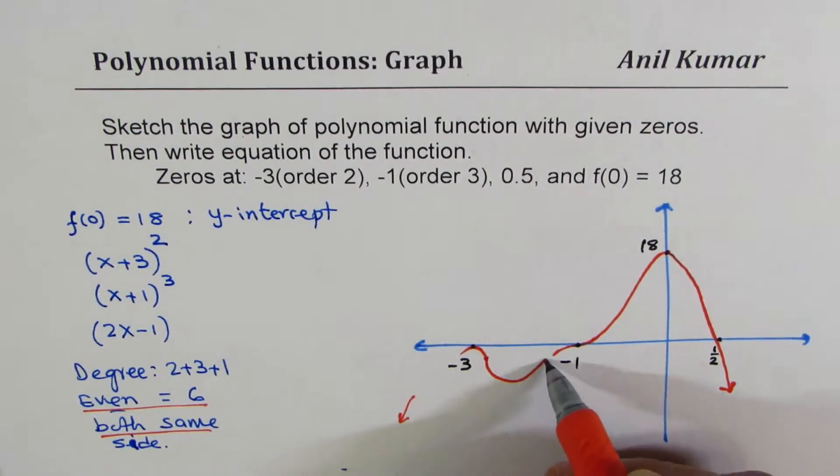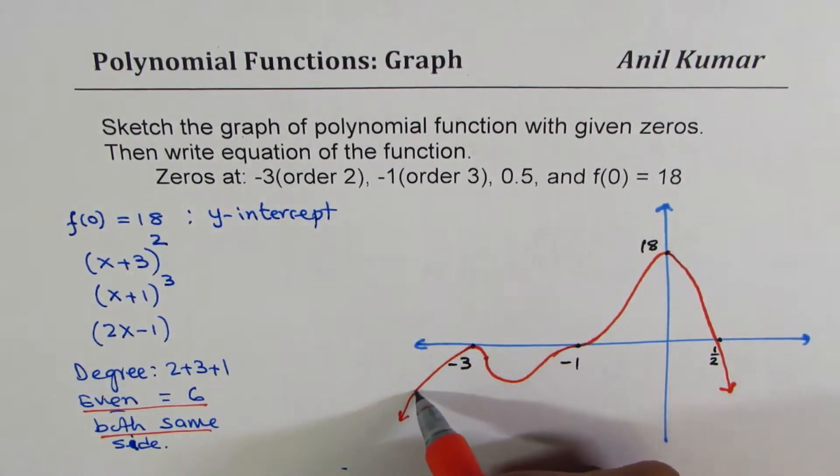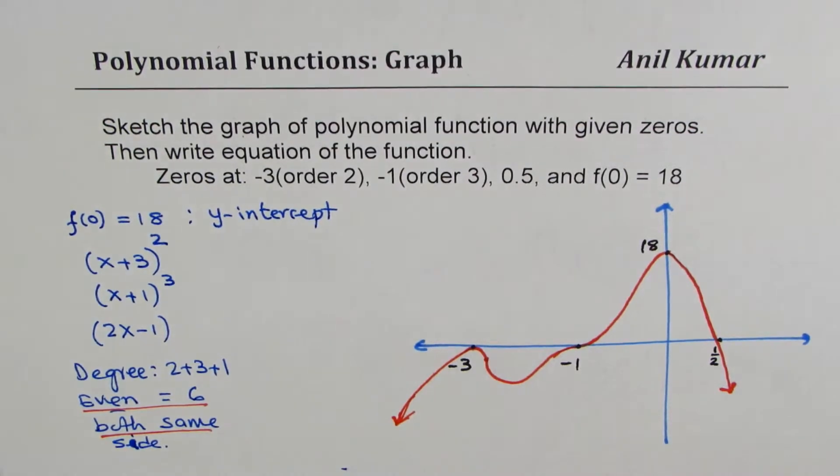Now, connecting these points, we actually get our graph. Do you see that? So, that is how the graph is going to be. As you can see, it will have a leading coefficient, which is negative.